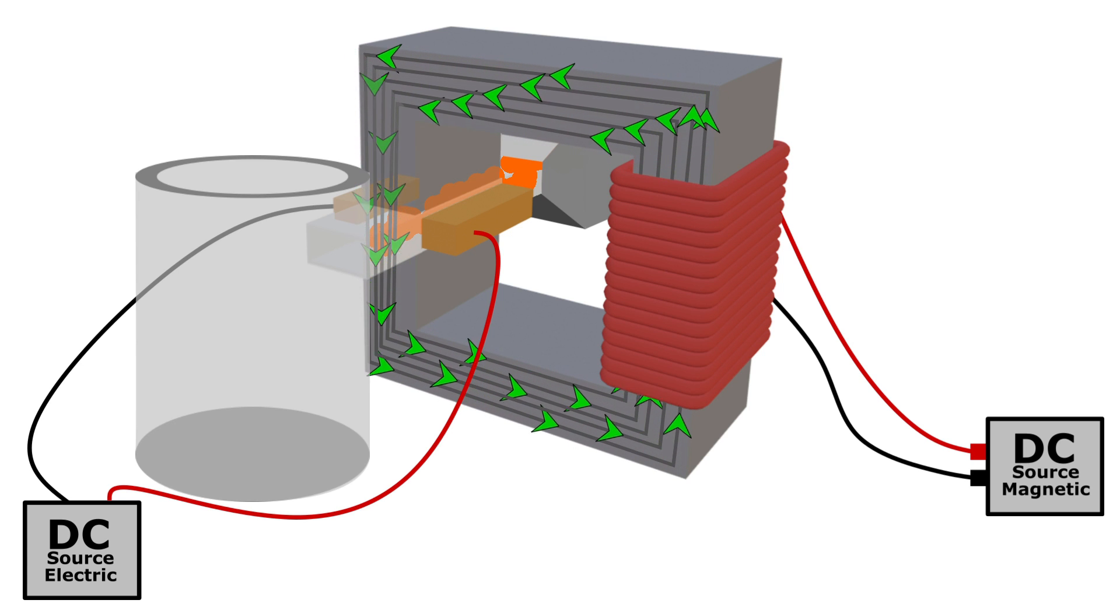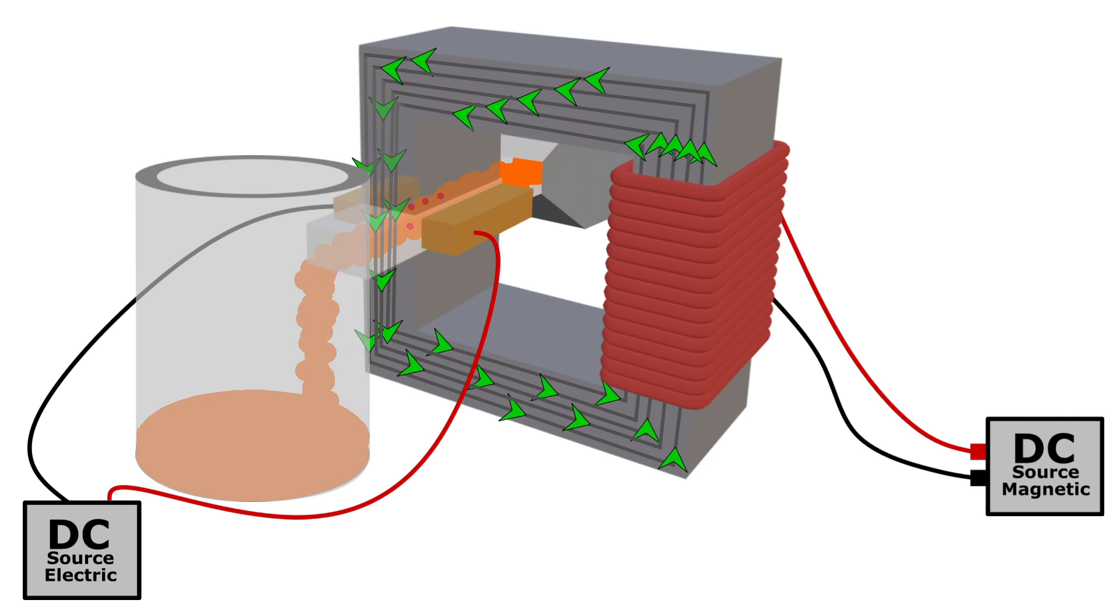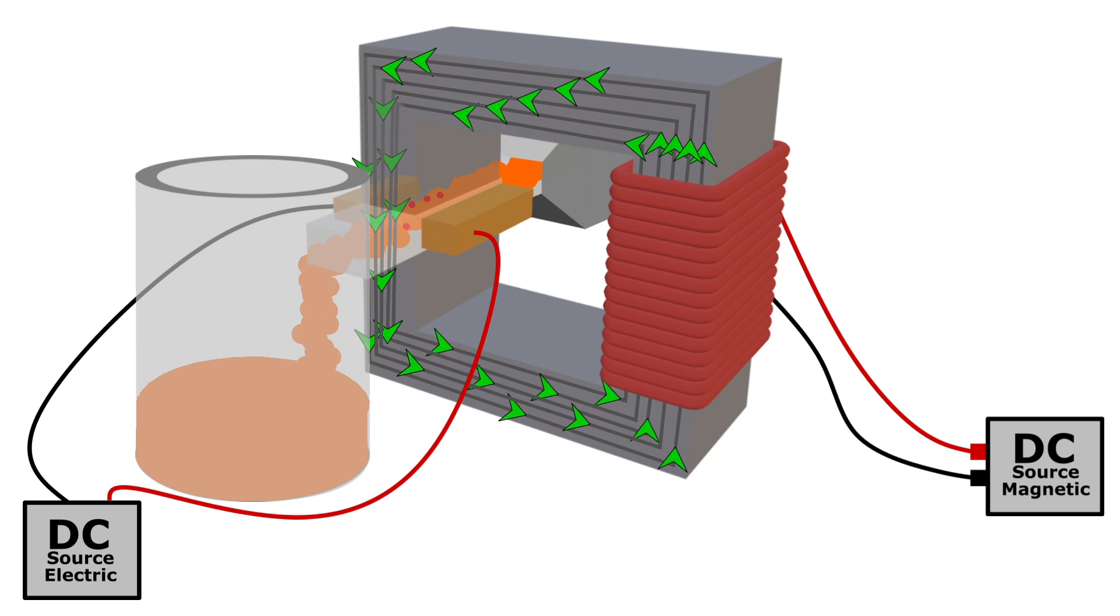As soon as we apply the current to the electrodes attached to the pipe, the liquid metal starts to flow, as the magnetic field created by the current inside the liquid metal tries to align with the magnetic field created by the coil.